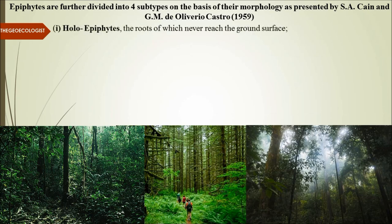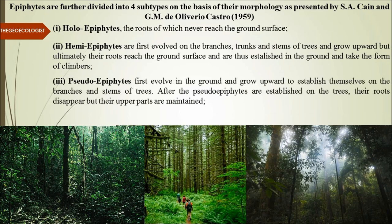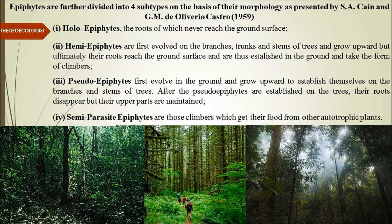Epiphytes are divided into four subtypes. Holo-epiphytes have roots that never reach the ground — they completely occupy the tree branch. Hemi-epiphytes begin on branches and grow upward, but their roots ultimately reach the ground. Pseudo-epiphytes first evolve in the ground and then grow up to establish themselves on branches. Semi-parasite epiphytes are completely dependent, getting their food from autotrophic plants — they are parasitic in nature. These are the four types of epiphytes found in this biome.